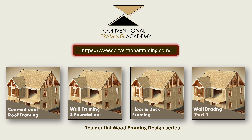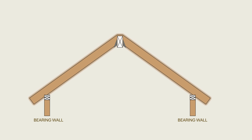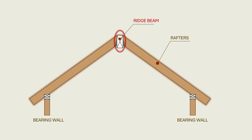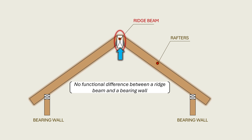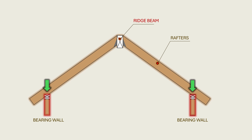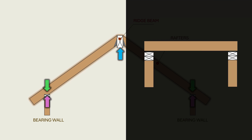In framing parlance, ridge beams are referred to as structural ridges. This designation reflects their role in supporting vertical loads like any other beam. When gable roof rafters are framed to a ridge beam, the beam is expected to carry vertical load from the rafters. This means there is no functional difference between a ridge beam and a bearing wall — they are both designed to support bearing loads. The implication is that vertical forces acting on the rafters do not develop any horizontal reactions at the supports. The bearing wall provides vertical support on one end of the rafter and the ridge beam provides vertical support at the other end, so the rafter acts like a horizontal joist that spans between supports and does not develop any horizontal forces.